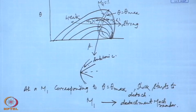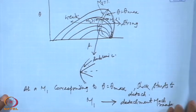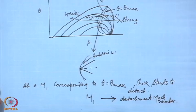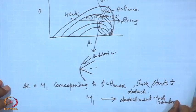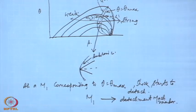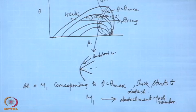For a blunt-nosed body, at any upstream Mach number the flow turning required is larger than theta_max and supersonic turning through an oblique shock is not possible. The flow always becomes subsonic ahead of the blunt nose and a detached oblique curved shock always stands ahead of it — that is, for a blunt-nosed body we have a detached shock at all Mach numbers.